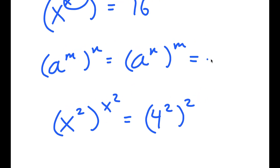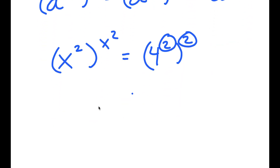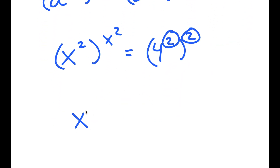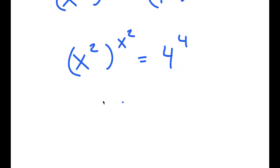Now, a to the power of m to the power of n is also the same thing as a to the power of m times n, meaning I can multiply these two. So now I have x to the power of 2 to the power of x to the power of 2, is equal to 4 to the power of 4.